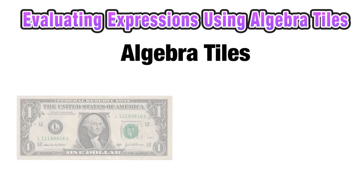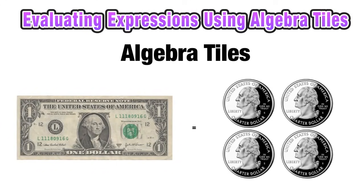So before we start using algebra tiles, let's think about how $1 is the same thing as 4 quarters. So we can think of a $1 bill as a representation of 4 coins that are each worth 25 cents. Algebra tiles work in a very similar way.